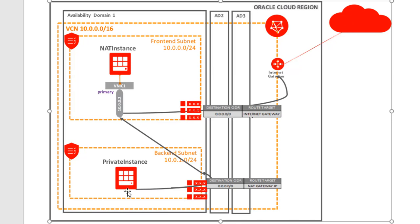The benefit was that communication is always initiated by the back-end instance. So if someone tries to hack into this NAT instance and tries to get to the data, they won't be able to, because the instance will not entertain any queries unless it is initiated by the instance itself. So it only works that way. This did work.